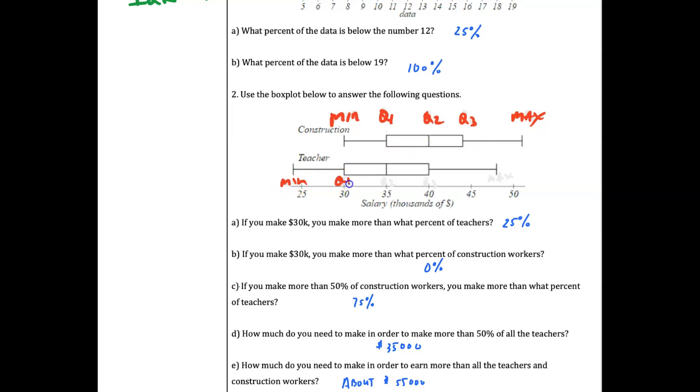This value is called quartile one. So quartiles are actual numbers - quartile two is the median, and then the max is a number. Q3 is a value, Q2 is a value, Q1 is a value. We call them quartiles, but it's a single value.